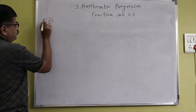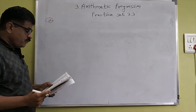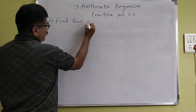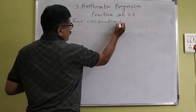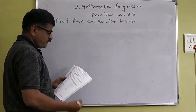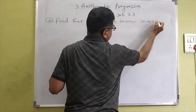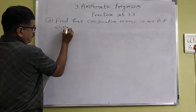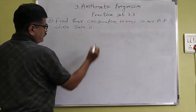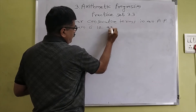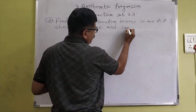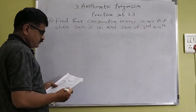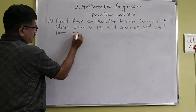Now question number 8: find four consecutive terms in an AP whose sum is 12 and the sum of the 3rd and 4th terms is 14.